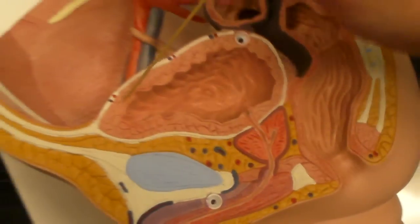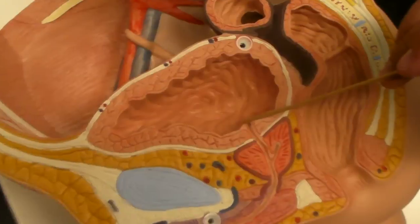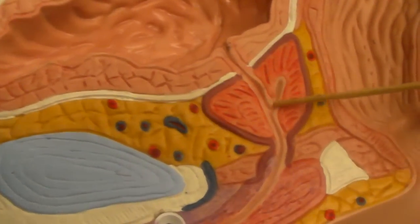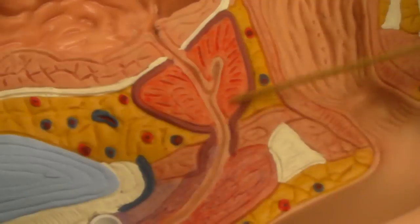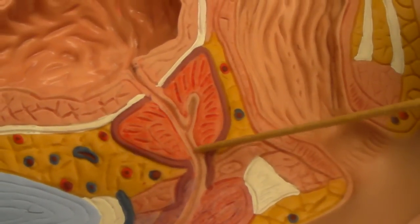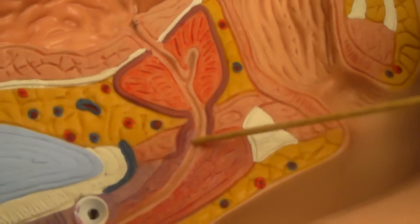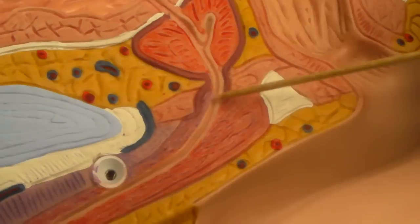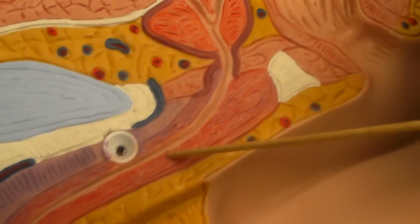So here we have the male model, and here we see the bladder. From the bladder comes the urethra. In this portion, it is the prostatic urethra, as it is right in the center of the prostate gland. As it comes out of the prostate, this is the membranous urethra, and as it comes into the penis, it becomes the penile or spongy urethra, going all the way down.